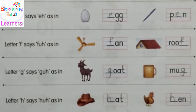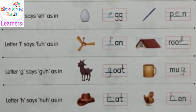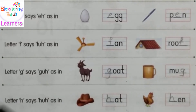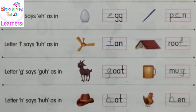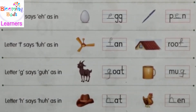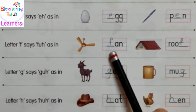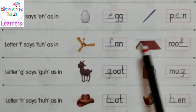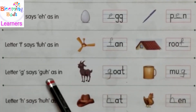Letter F says 'f'. Now the sound of letter F is not said as a full vowel sound — it is 'f', just 'f'. Like in fan, roof. Fan, roof.